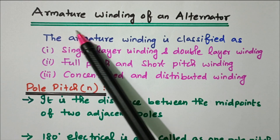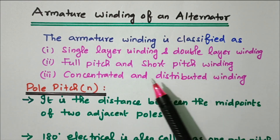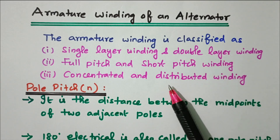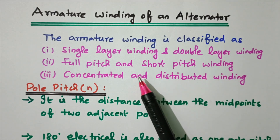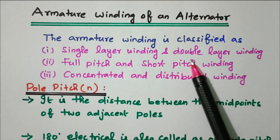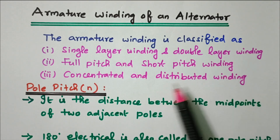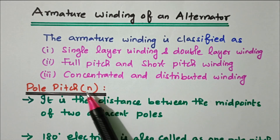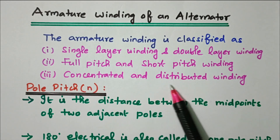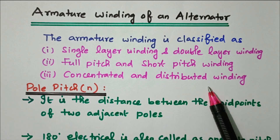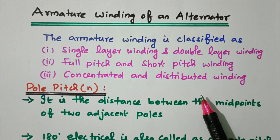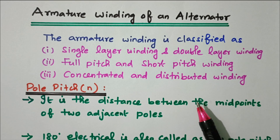Now we'll go to the topic: armature winding of an alternator. The armature winding is classified into three major types: single layer winding and double layer winding; full pitch and short pitch winding; and concentrated and distributed winding. We will see each one by one. Before that, we will see the details about pole pitch and coil span so that we are able to understand the winding types.